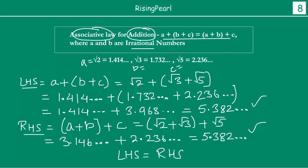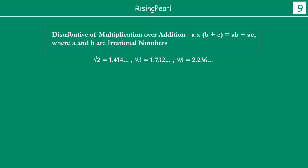Now I think we are left with the last two operations. The first one is distribution of multiplication over addition. So this means when you do A times B plus C, this multiplication is actually distributed over this addition — there are two numbers being added. So this is equal to AB plus AC. This is called the distributive property of multiplication over addition.